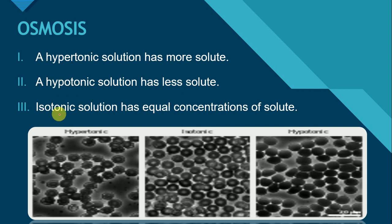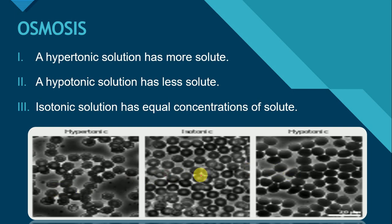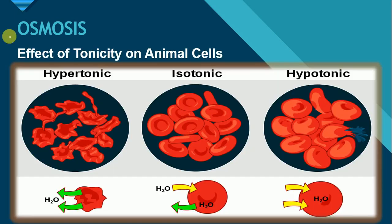Then iso means same and tonic means solute. Isotonic solution aisa solution hooga jis mein solute aur solvent ki concentration same hooghi. These three diagrams are going to represent these three types of solutions: hypertonic, isotonic, and hypotonic solution.